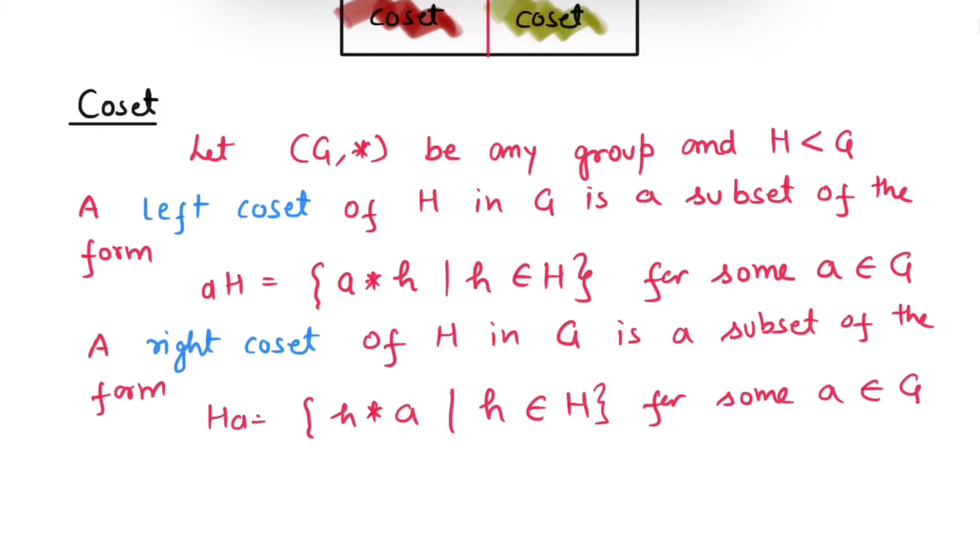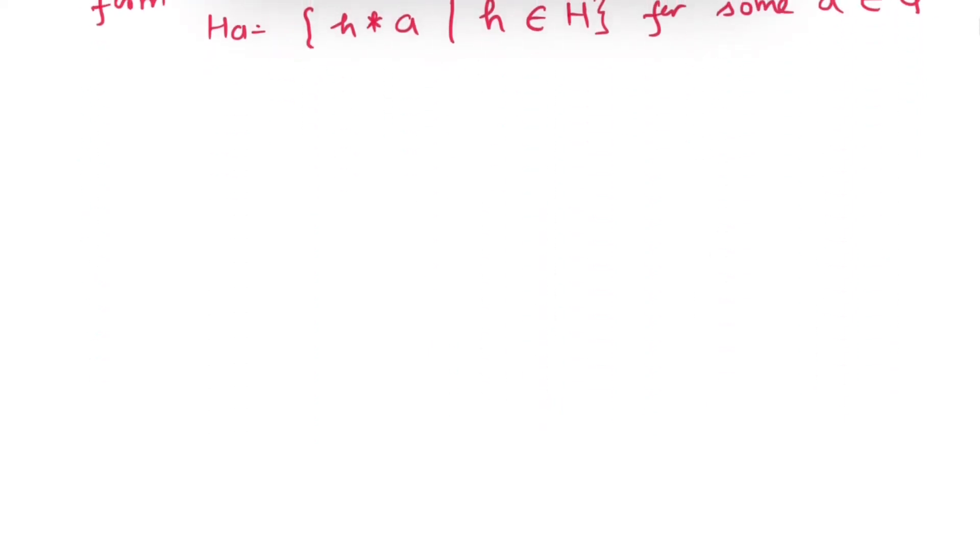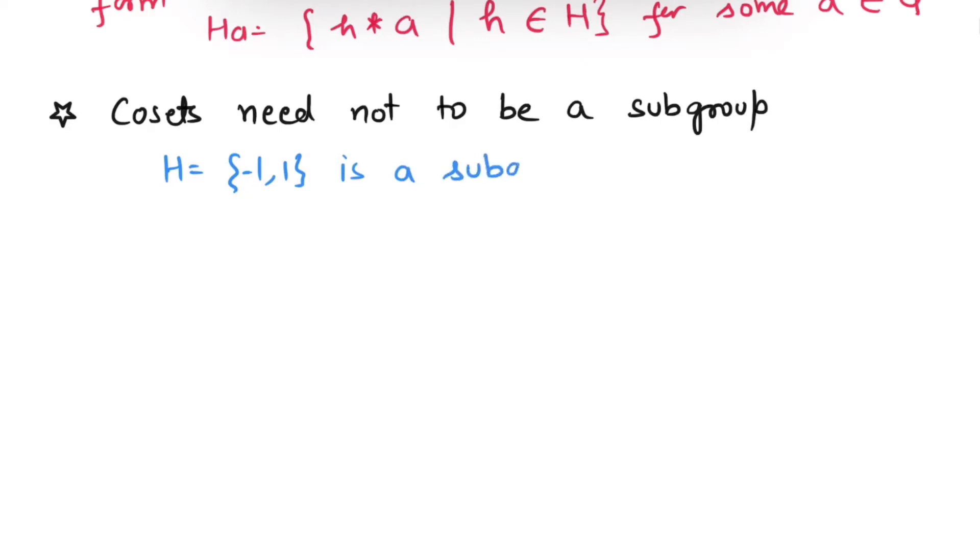Now, there is something interesting which you should always keep in mind that cosets need not to be a subgroup. For example, minus 1, 1 is a subgroup of group G containing elements 1, minus 1, I, minus I under operation multiplication, and here I is square root of minus 1.